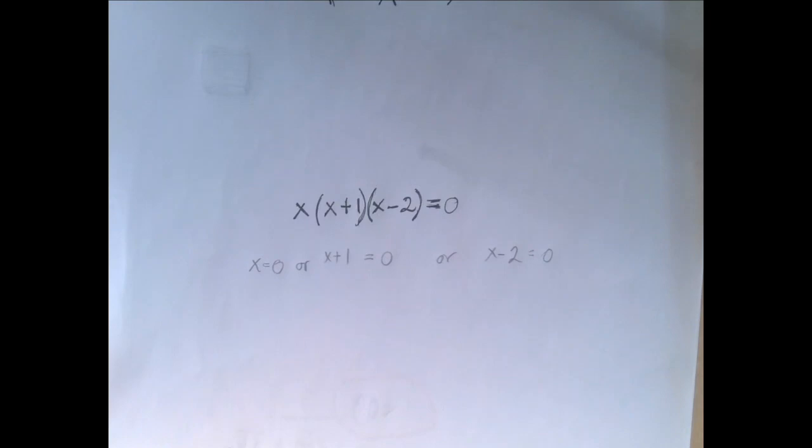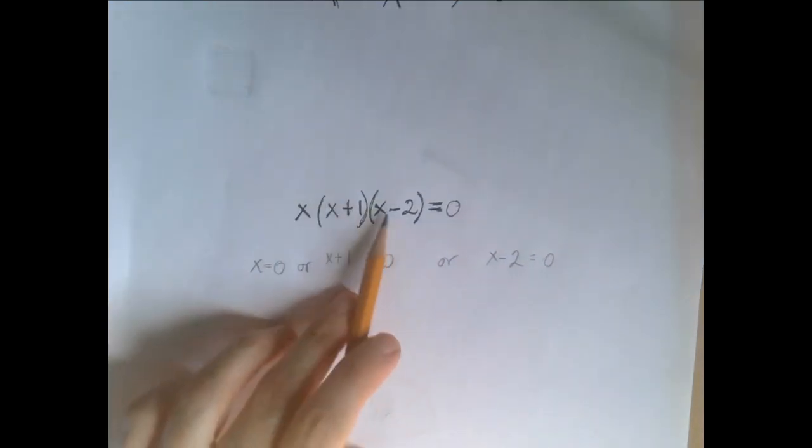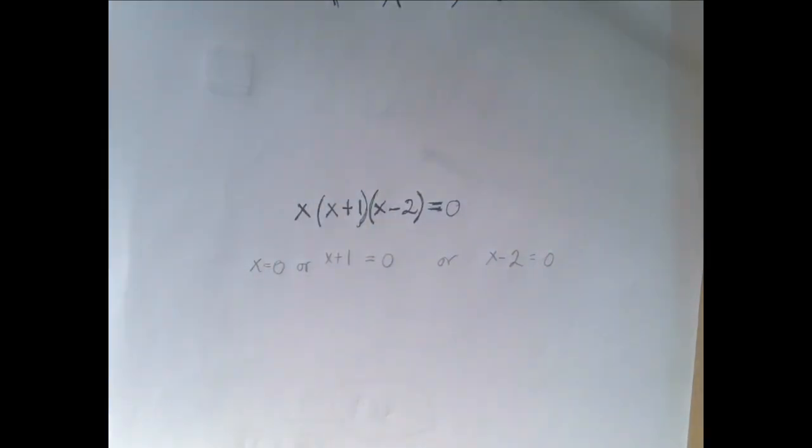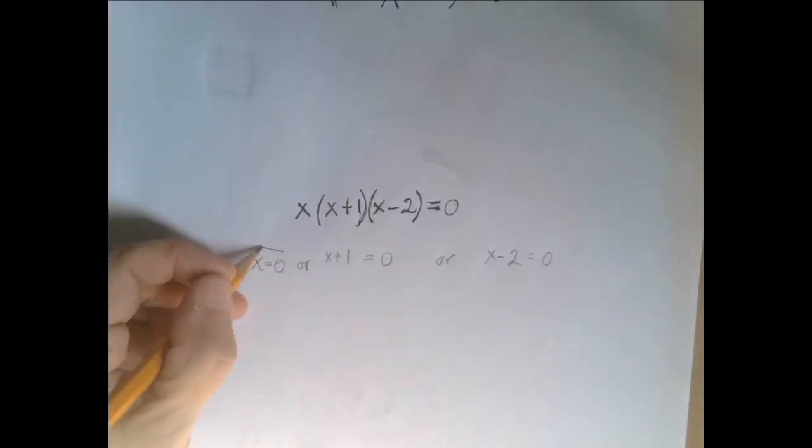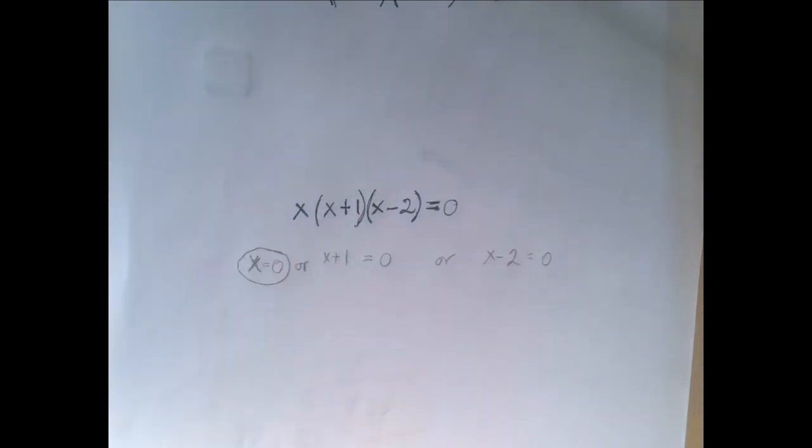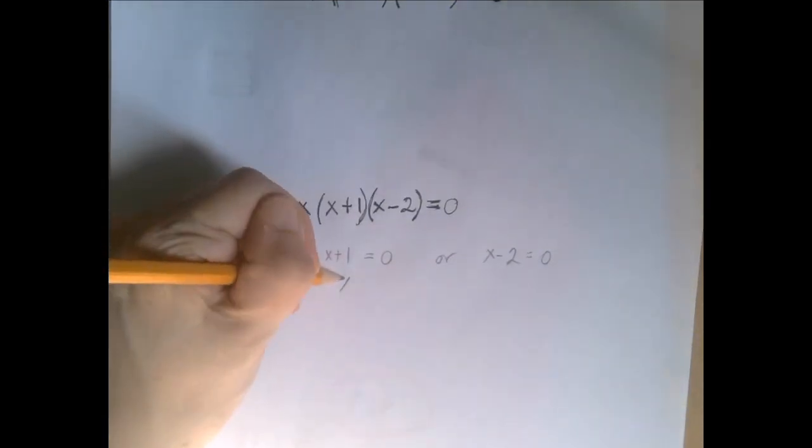The nice thing is when x equals zero, we don't have to worry about the value of the other factors. That one zero will take care of the product being zero. So we traded one equation into three linear equations. This one is already solved: x equals zero. If x is zero, the first factor is zero. Solving the second linear equation, if x is negative 1,